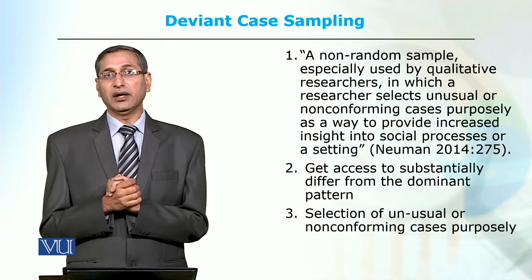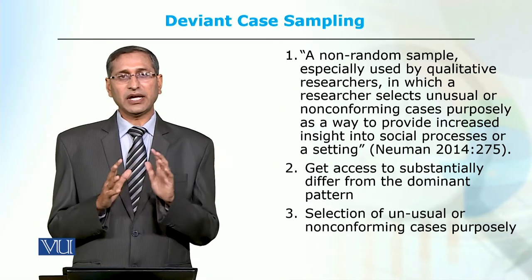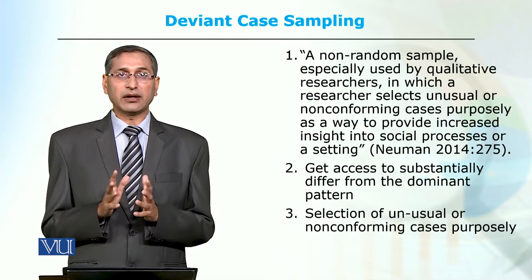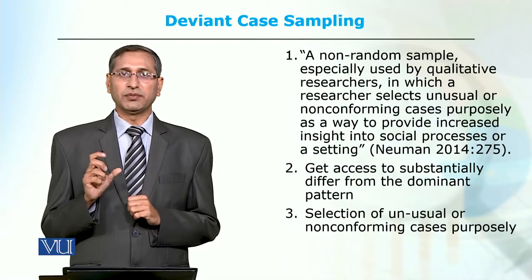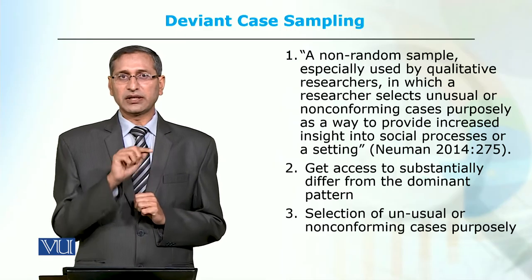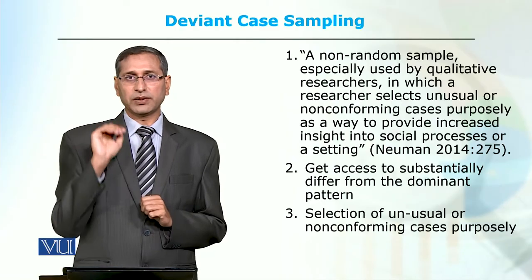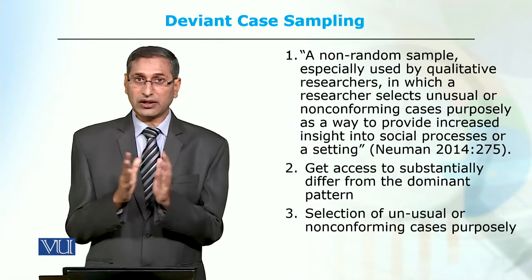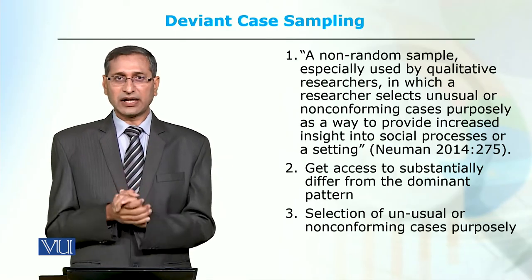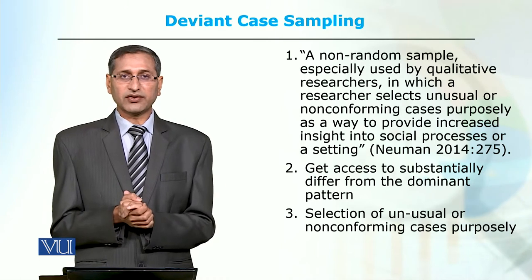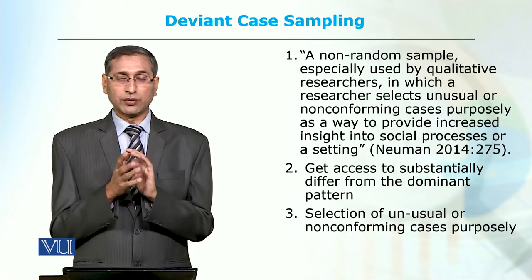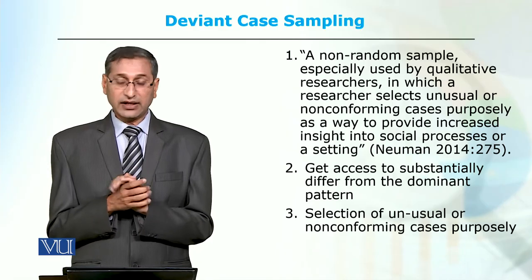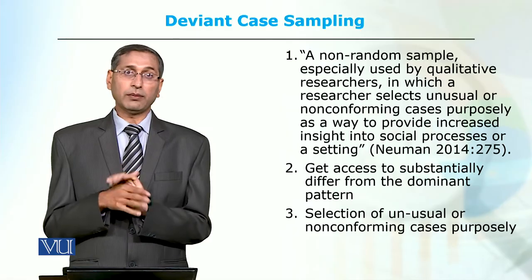زینب قتل case ہمارے سامنے ہے جہاں criminals نے as a serious killer criminal کام کیا۔ یہ ایسے incidents بہت rare ہوتے ہیں، some selected cases میں ہوتے ہیں۔ اگر non-quantitative research کی language میں کہیں تو یہ outliers ہیں - ایسے extreme cases جو normal سے بہت زیادہ اوپر یا نیچے ہیں۔ یہ normal routine سے ہٹکے ہیں، اس لیے ان تک access بڑی difficult ہے۔ اگر normal routine کے cases ہوں تو purposive sampling، convenient sampling یا snowball sampling use کریں گے۔